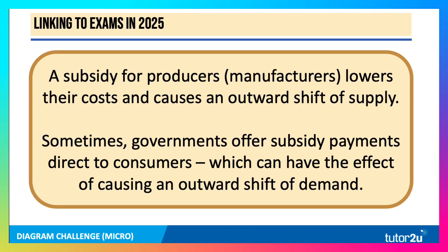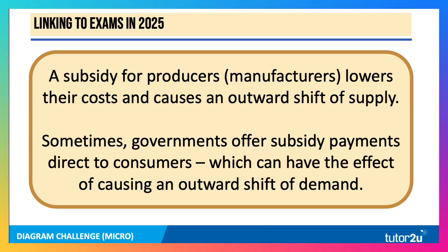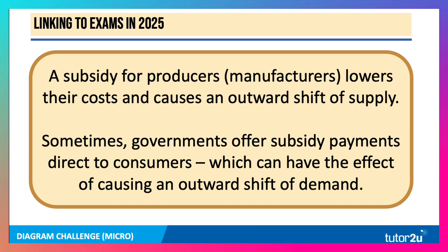Linking to the exams: a subsidy for producers lowers their costs and causes an outward shift of supply. Sometimes governments offer direct subsidy payments to consumers, which causes an outward shift of demand instead. Look carefully at the stimulus and stem of the question to determine which applies.